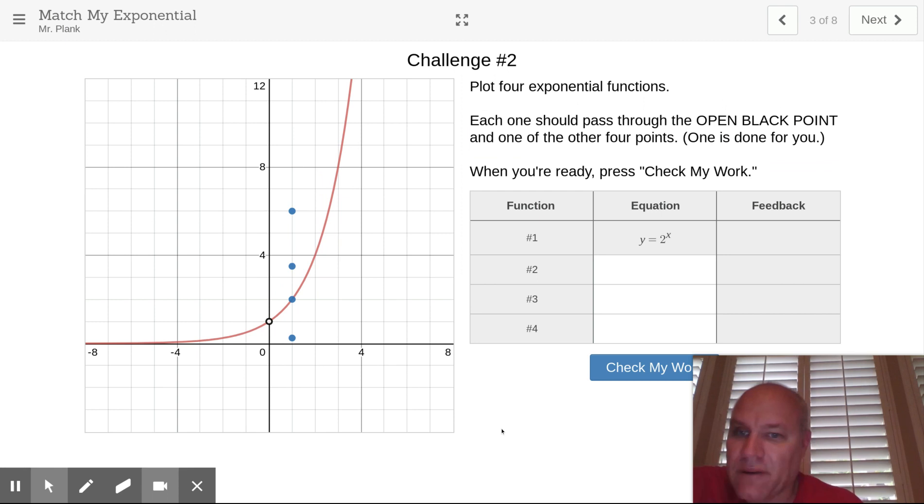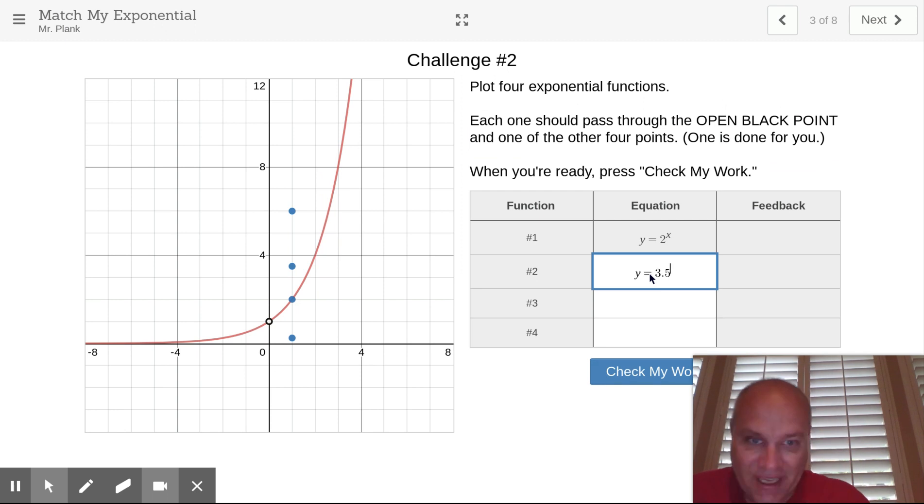So we've got challenge 2. I gave you the first one, y equals 2 to the x. Again, our a value is 1, so this first blue one up here looks like it's between 3 and 4. So let's try y equals 3.5. Then I hit shift 6. It gives you the carrot to go and see how it goes up for exponent. And I'll put my x there. Let's check it. Yep, there it is. It worked.